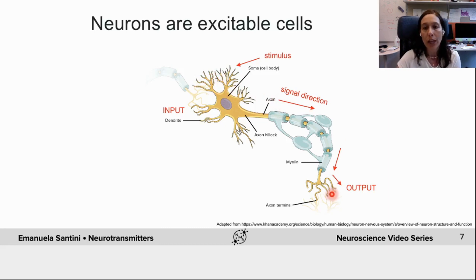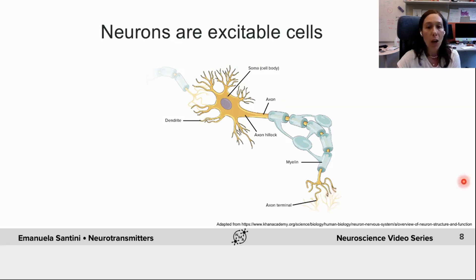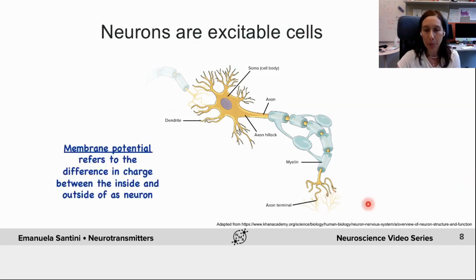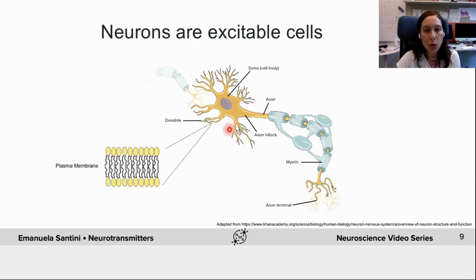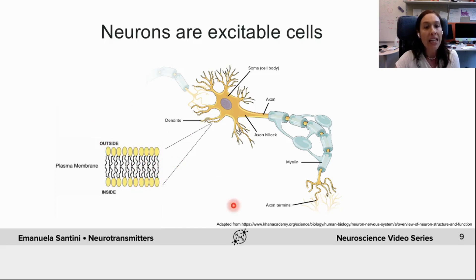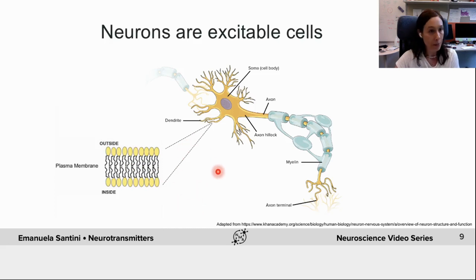Before entering into the way in which neurons signal to each other, let's briefly recap some basic principles of neuronal excitability. One of them is the concept of membrane potential, which refers to the difference in charge between the inside and the outside of the neuron. If we imagine looking closely at the plasma cell membrane of the neuron, this is a structure that separates the inside of the cell from the outside environment. The difference in electrical charge of the membrane develops through the grouping of ions on the inside and the outside of the membrane.